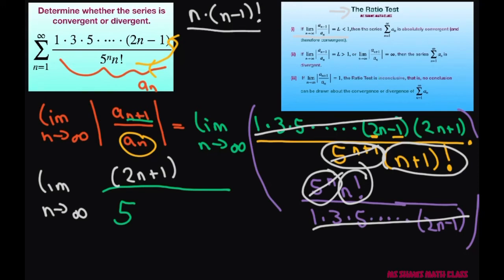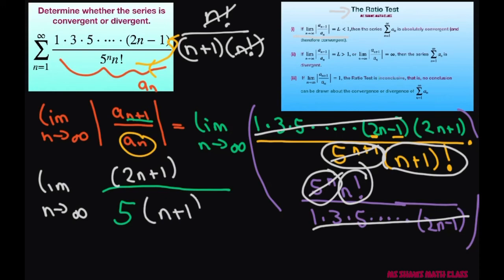And then for the denominator we have (n+1) factorial. So let's do this: we're going to write n factorial in the numerator, and the denominator is going to be (n+1) times n factorial. So that cancels out, so the denominator just has n+1. All right, now that we took care of all of that, we can evaluate the limit.